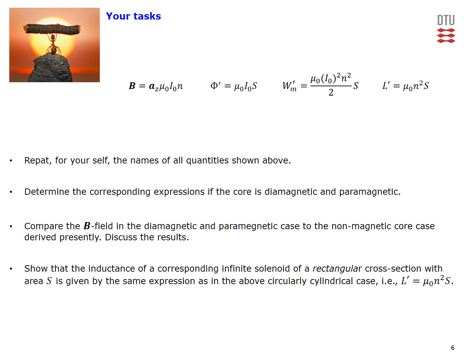We have now completed all of our tasks and the results are shown on this slide. As exercises: identify the names of all quantities shown; determine the corresponding expressions if the core is made of diamagnetic or paramagnetic material and compare the B field in those cases to the non-magnetic core case; and show that the inductance of a corresponding infinite solenoid with a rectangular cross-section of area S is given by the same expression as in the circular cylindrical case.